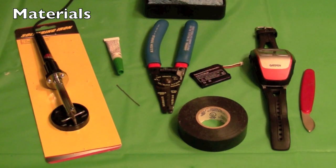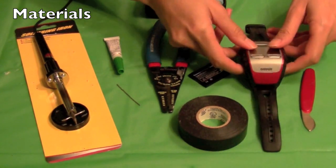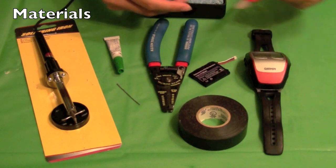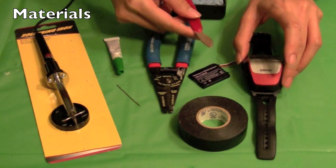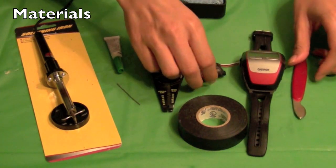The materials you'll need for this project are: your Garmin Forerunner 305 watch, a tool to pry apart the front and back of your Garmin watch, and a replacement battery.